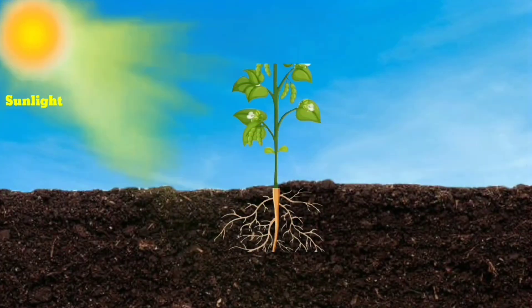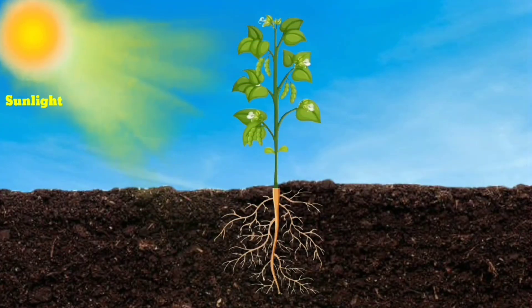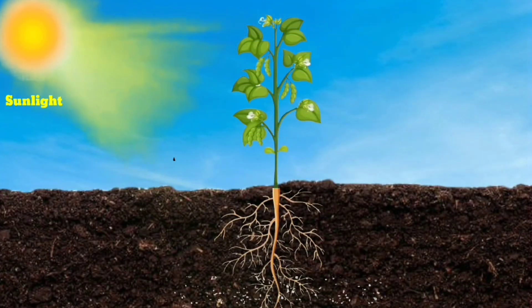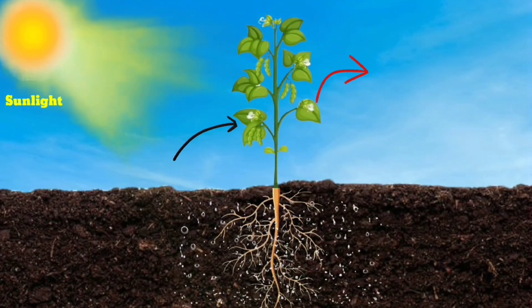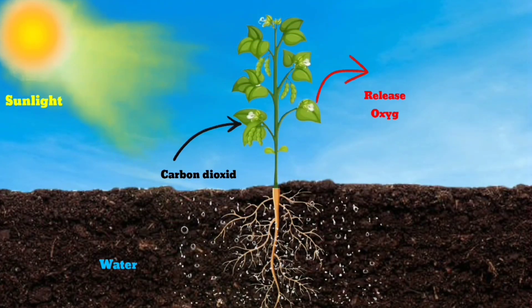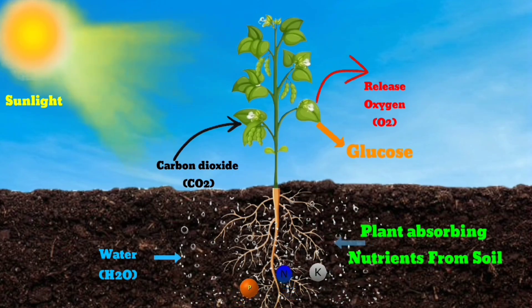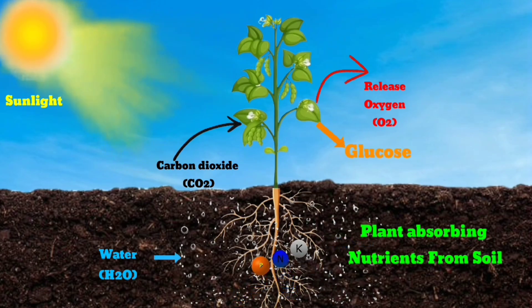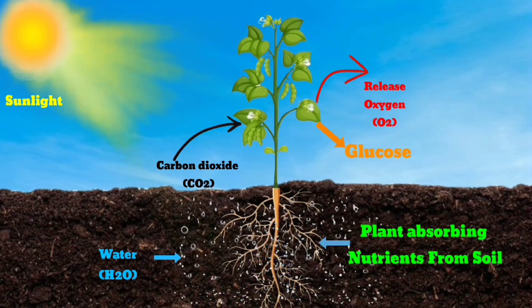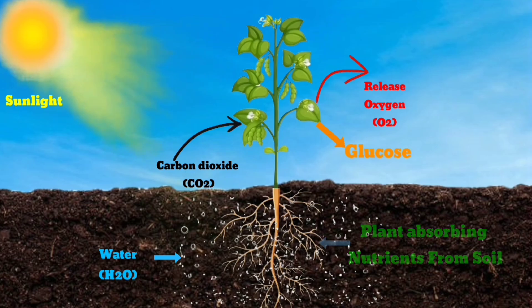First, let's talk about how plants get their nutrients. Plants are autotrophs, meaning they produce their own food through photosynthesis. They absorb water through their roots and carbon dioxide from the air through tiny pores called stomata in their leaves.